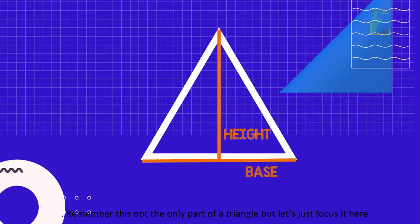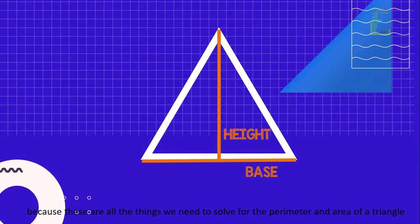Remember, this is not the only part of a triangle, but let's just focus it here because these are all the things we need to solve for the perimeter and area of a triangle.